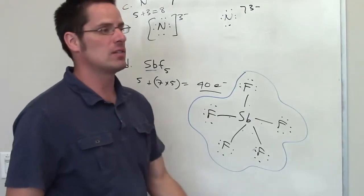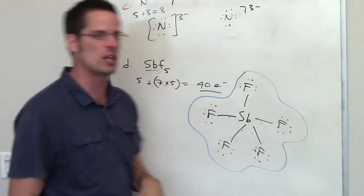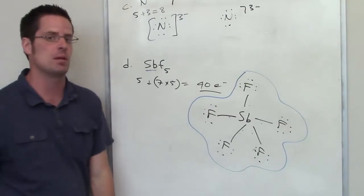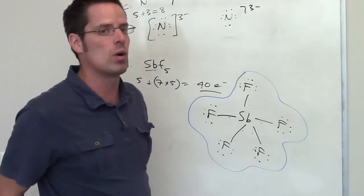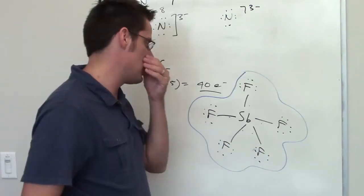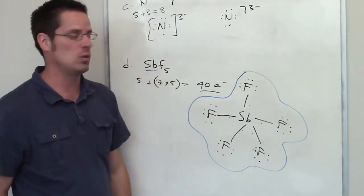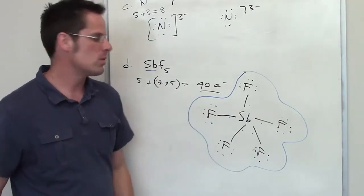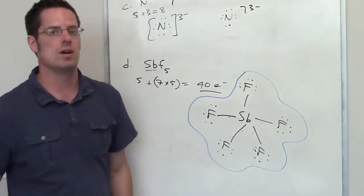However, you can violate octet rules when there is no other choice, particularly for elements that are in row 3 or below of the periodic table. The reason is because those elements have higher orbitals that have the ability to contain more electrons than just your 8 electrons that you normally see with the lower rows. So this is a case where antimony, the central atom, does violate the octet rule, and the reason is because there is no other way you can get all 40 electrons into that system without violating the octet rule on the peripheral fluorines, which you're not going to want to do.